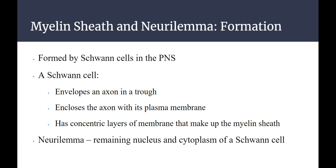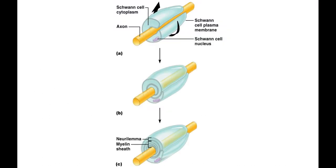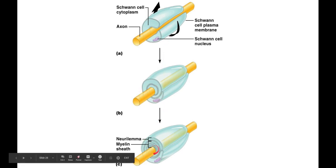The neurolema is the remaining nucleus and cytoplasm of a Schwann cell on the outside. You can see in the picture how it starts enclosing the axon in just a little trough, then wraps around and around — like a cinnamon bun of myelin sheath. The neurolema is that last outer part containing the nucleus.